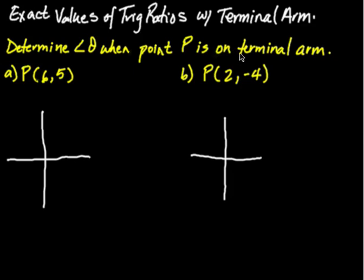We're going to be looking at finding the exact values of trig ratios and the value of angles when particular points are on the terminal arm in the Cartesian plane. The first question: we're looking for angle theta when point P(6,5) is on the terminal arm. The first thing you should always do is graph that point.